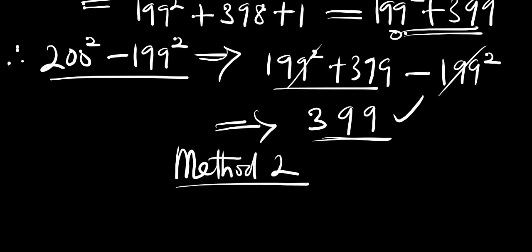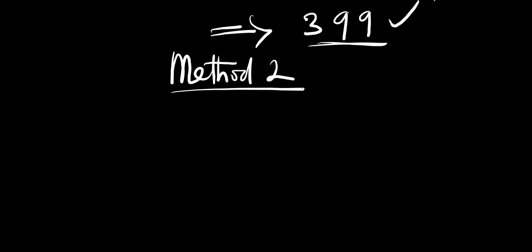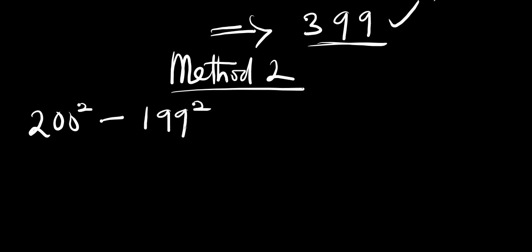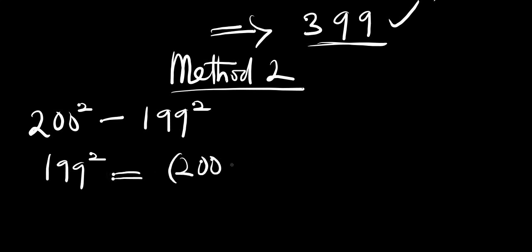Now let's consider method 2. We recall the problem: 200 squared minus 199 squared. In this method, we rewrite 199 squared as (200 minus 1) squared, and we are going to make use of a different identity.